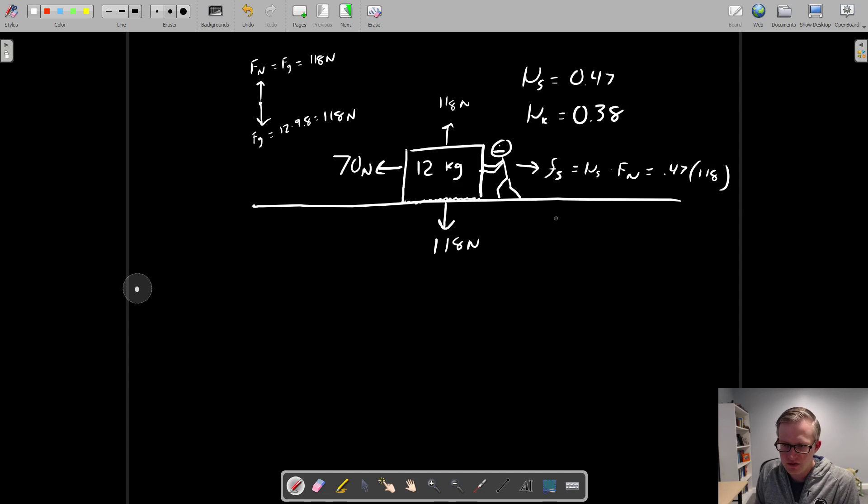We still have a static friction of 55 newtons. However, our 70 newtons is enough to overcome that, so we toss that out. We're no longer in a static system, we're now dealing with a kinetic system. We have a kinetic friction which we can calculate by 0.38 multiplied again by the normal force. We already know it's going to be less than 55, we just don't know how much less. So 0.38 times 118, and I get about 45 newtons worth of force.